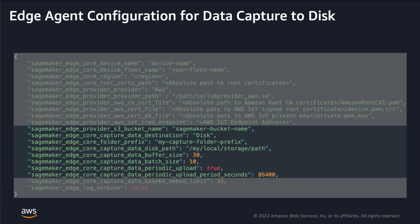For devices that have very infrequent internet connections or for testing, the Edge agent also supports capturing data to a local disk on the Edge device. To do that, you have to set the captured data destination as disk and not cloud, and also specify a local file path that the Edge agent will use to capture data. You can still have the device upload captures to the cloud. To enable this, you set the periodic upload flag to true and set the periodic upload period in seconds as in this example.